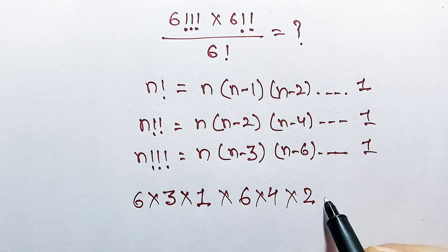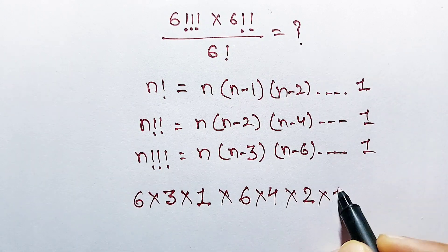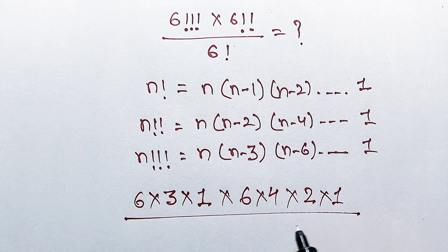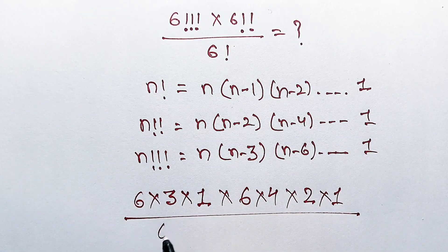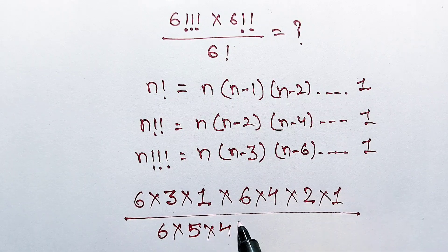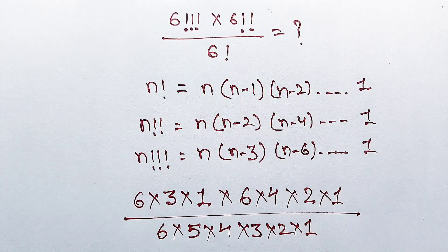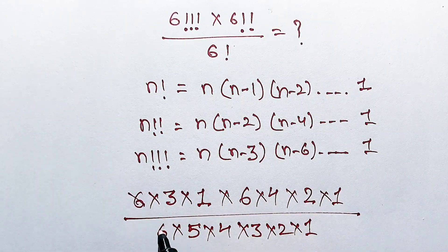But we are not writing 0 as our last term is 1. Our 6 factorial is equal to 6 multiplying 5 multiplying 4 multiplying 3 multiplying 2 multiplying 1. Now this will cancel out.